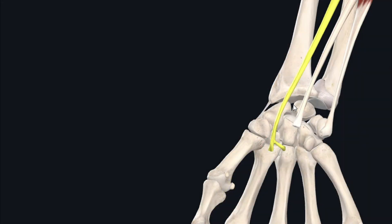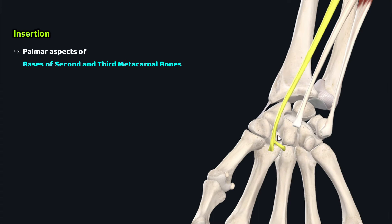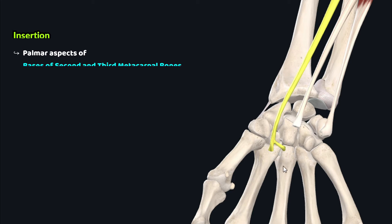This muscle belly then inserts through a long tendon onto the palmar aspects of the bases of the second and third metacarpal bones.